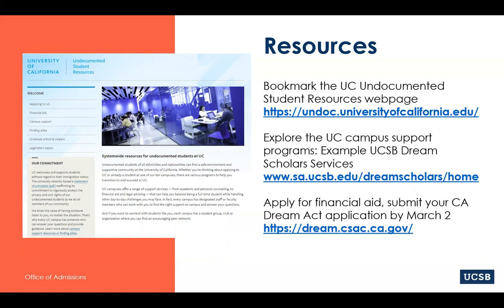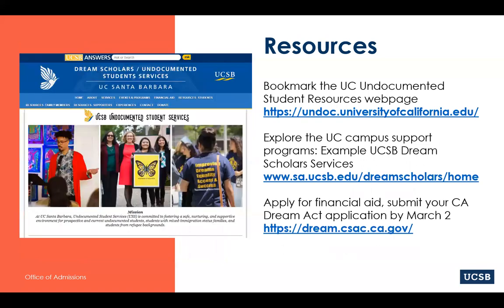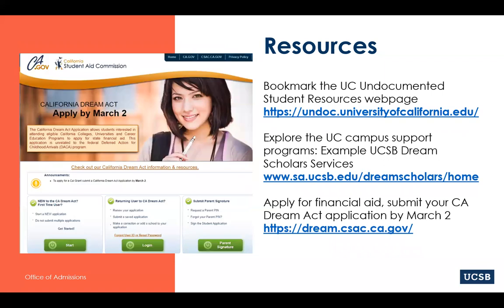Each University of California campus has a full-time undocumented student services coordinator. After you apply, check out the UC campus's web page for undocumented students. Don't forget to apply for financial aid if you qualify. AB 540-eligible students should submit a California Dream Act application by the March 2nd priority deadline, which will allow you a financial aid award letter if admitted. All undocumented students should be looking at private scholarships to see what money you can bring to your UC campus.